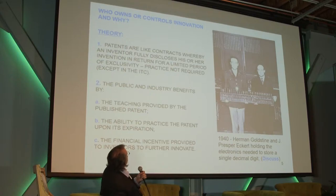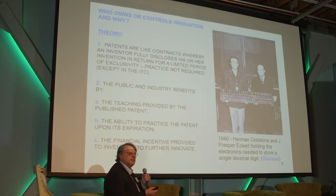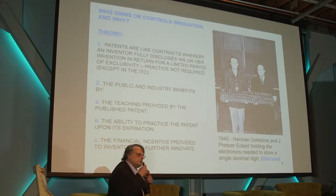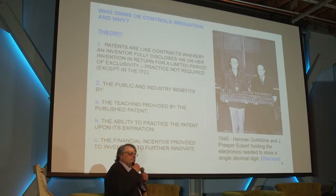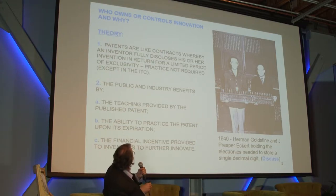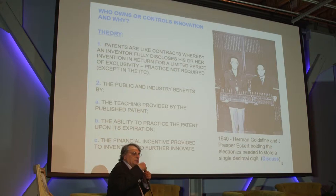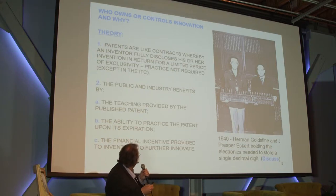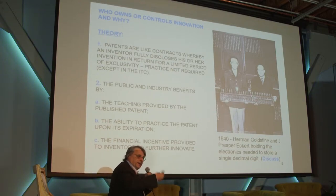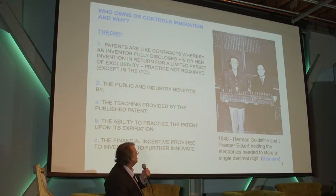Patents are like contracts whereby we say to an inventor: if you disclose your invention in enough detail and with enough specificity that the public can learn from it, enjoy the teachings once it's published, and actually practice it once it's expired — in return for that, the public will give you a financial incentive and the right of exclusion.